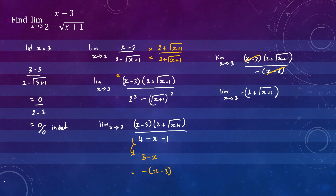Now we can apply the substitution method again. We get negative of 2 plus the square root of 3 plus 1, which is the square root of 4, so that gives us negative of 2 plus 2, which equals negative 4. And this is your final answer.